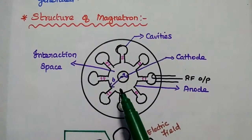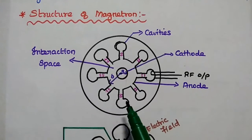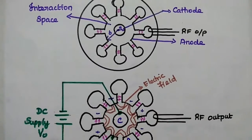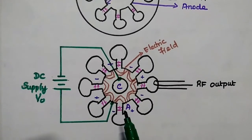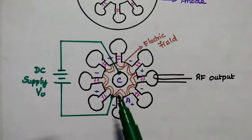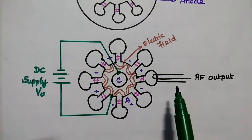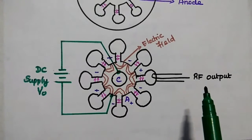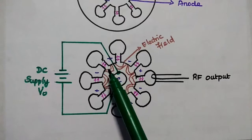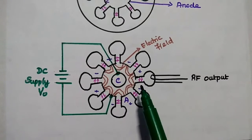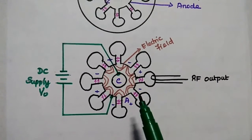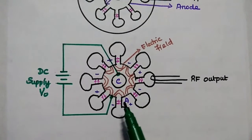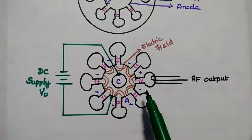There is a permanent magnet in this magnetron which is used to produce a strong magnetic field. A DC supply voltage is applied between the cathode and anode, and then microwave oscillation can be taken from the cavity using a coupling method. The electric field and the magnetic field produced by the permanent magnet are perpendicular to each other, which is why it is called a crossed field type.